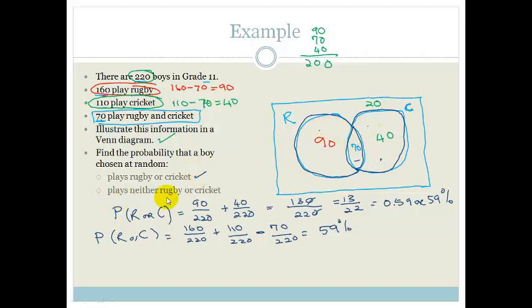Now how many people play neither rugby or cricket? Well these 20 kids don't play either rugby or cricket. Therefore the probability of you playing not rugby or cricket, which is really the complement of these two sets, is going to be 20 over 220, which is 1 over 11 or 9%.